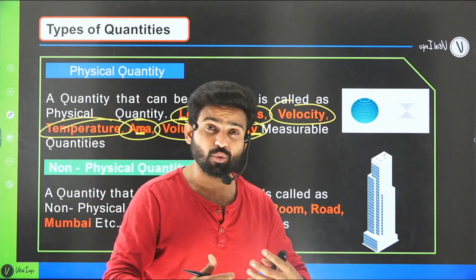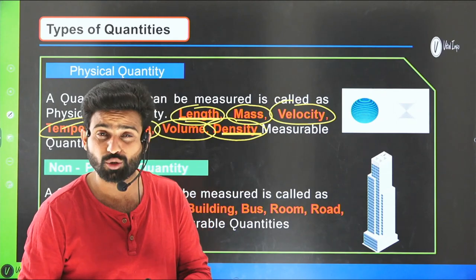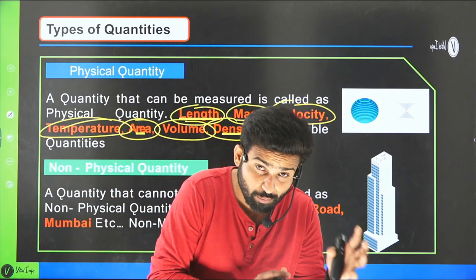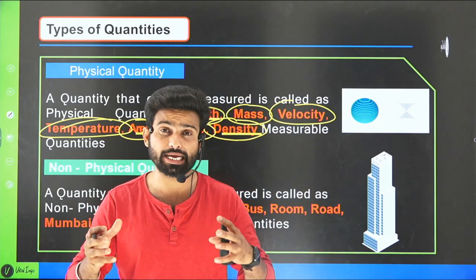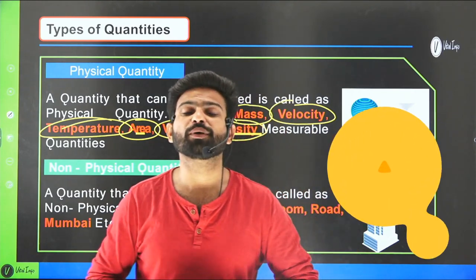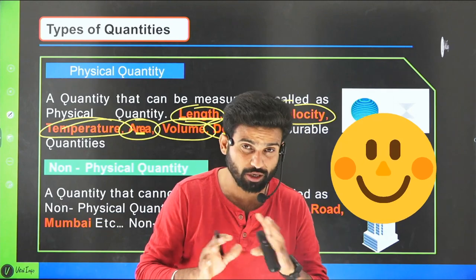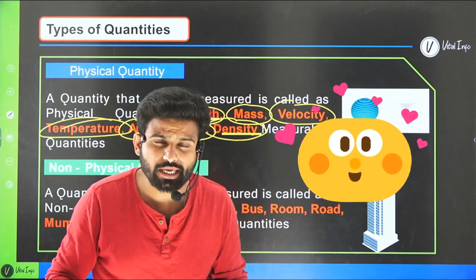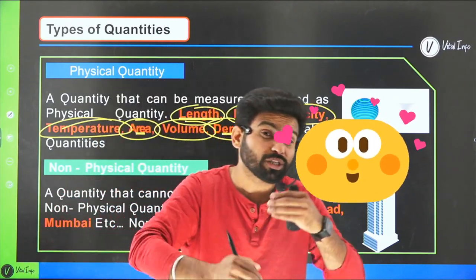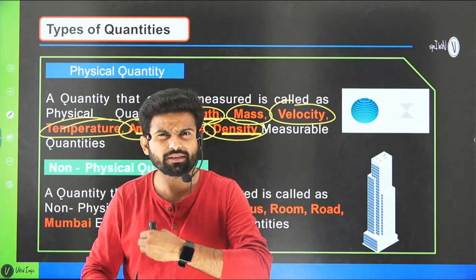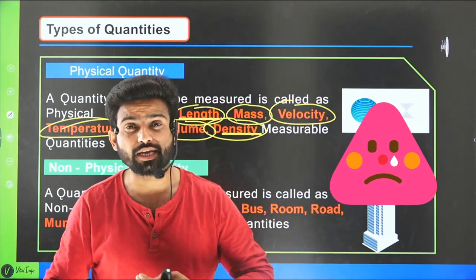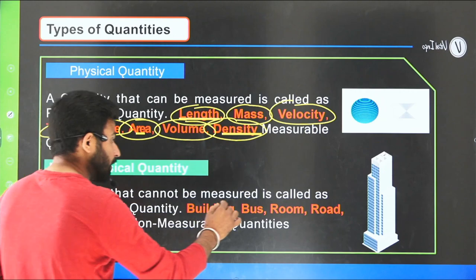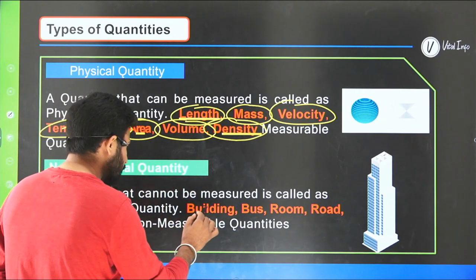Non-physical quantities are those that you cannot measure. For example, the happiness of a person — you cannot measure it. The sadness of a person, emotions — you cannot measure them. There is no scale to measure how happy or how sad a person is. A quantity that cannot be measured is called a non-physical quantity.